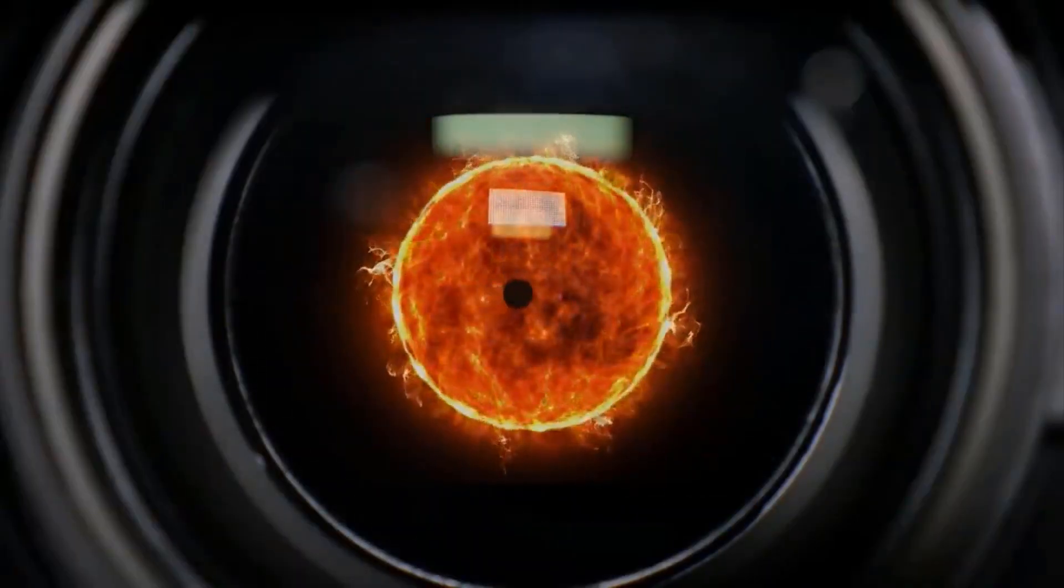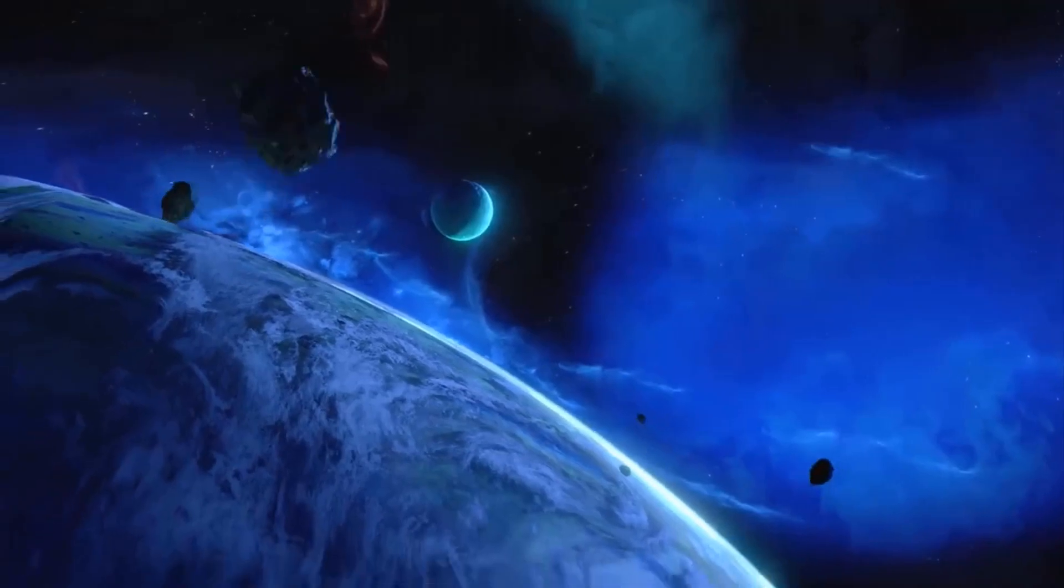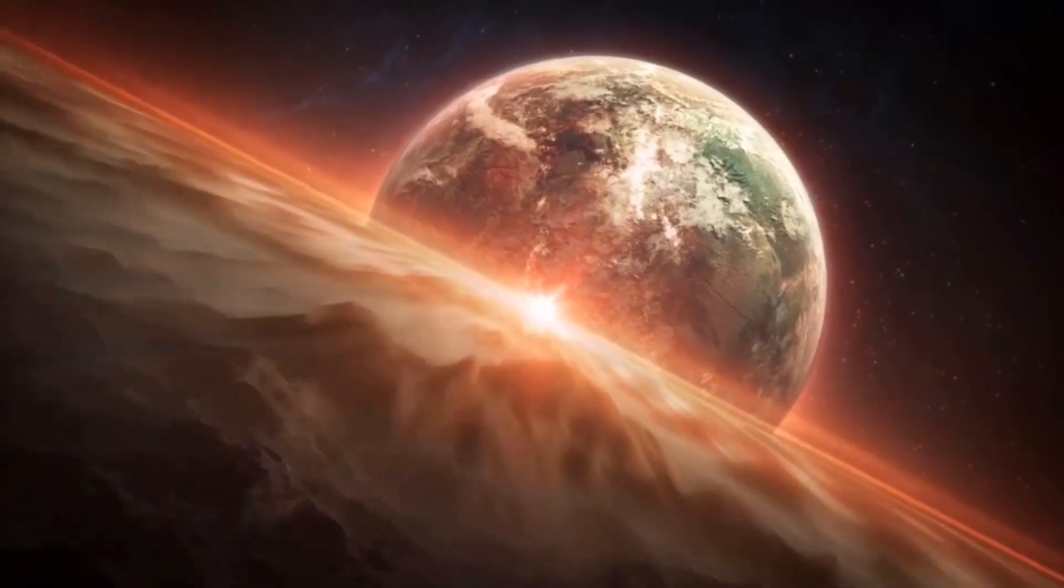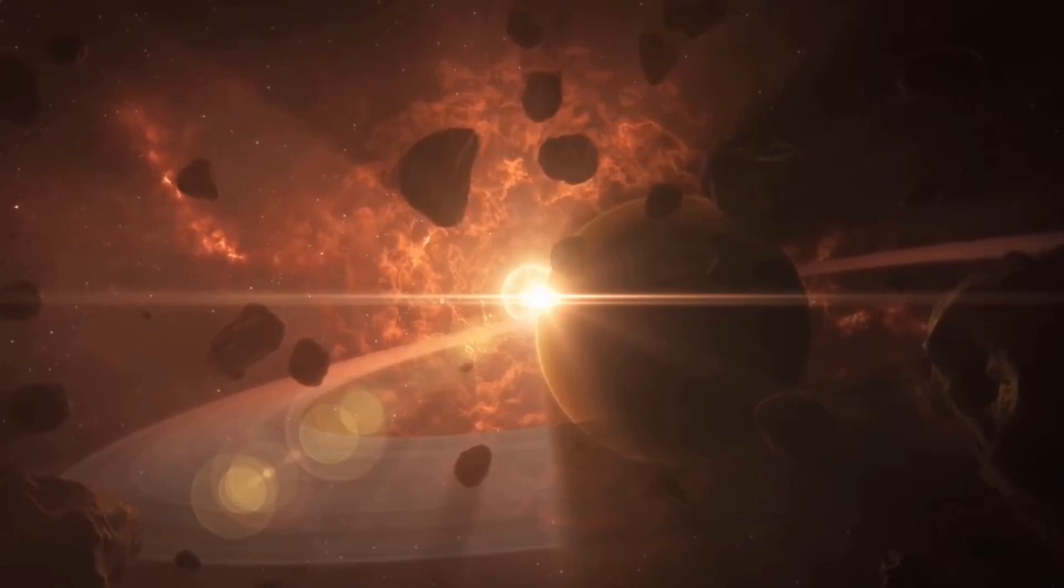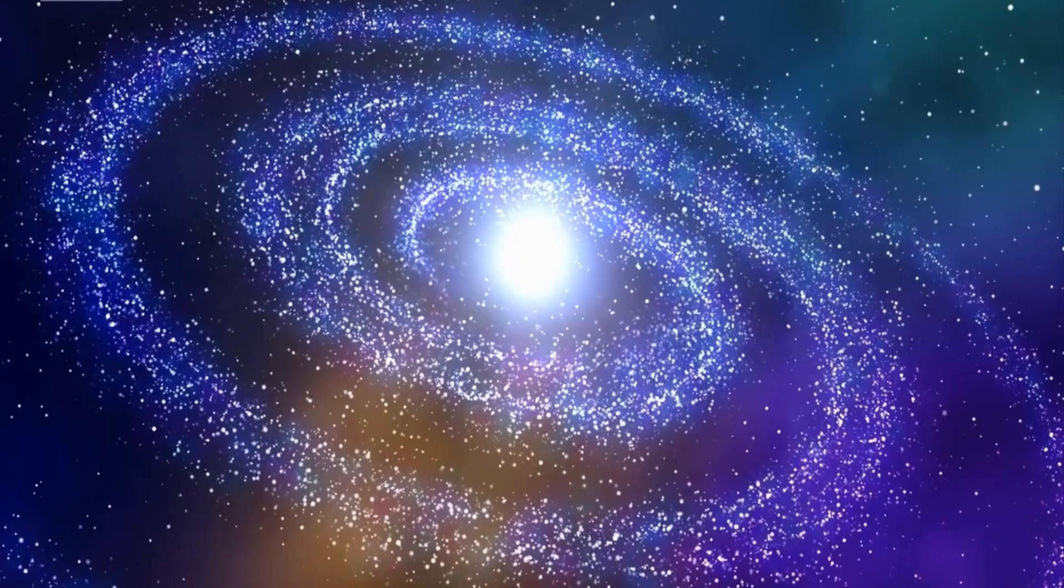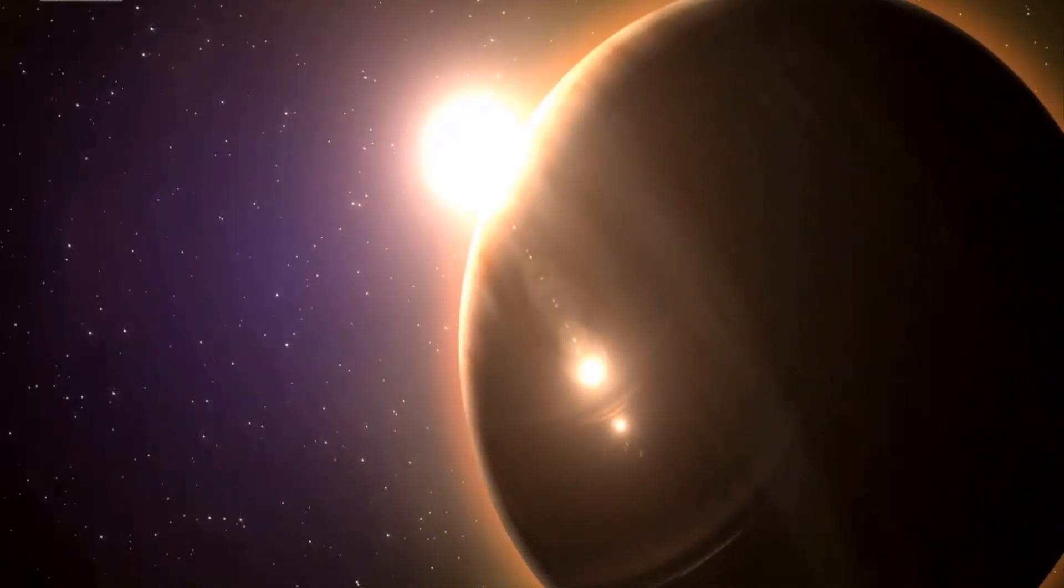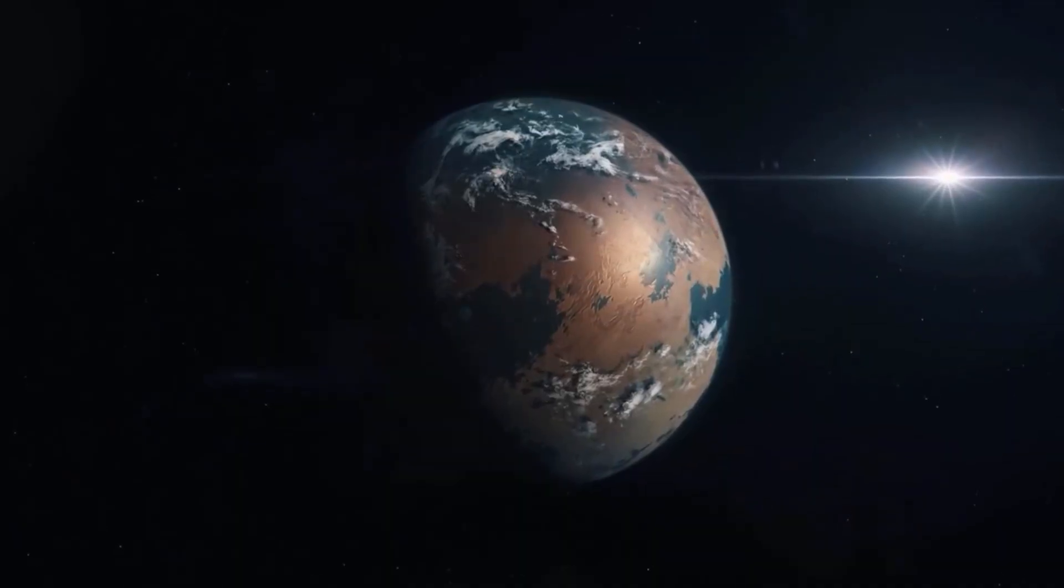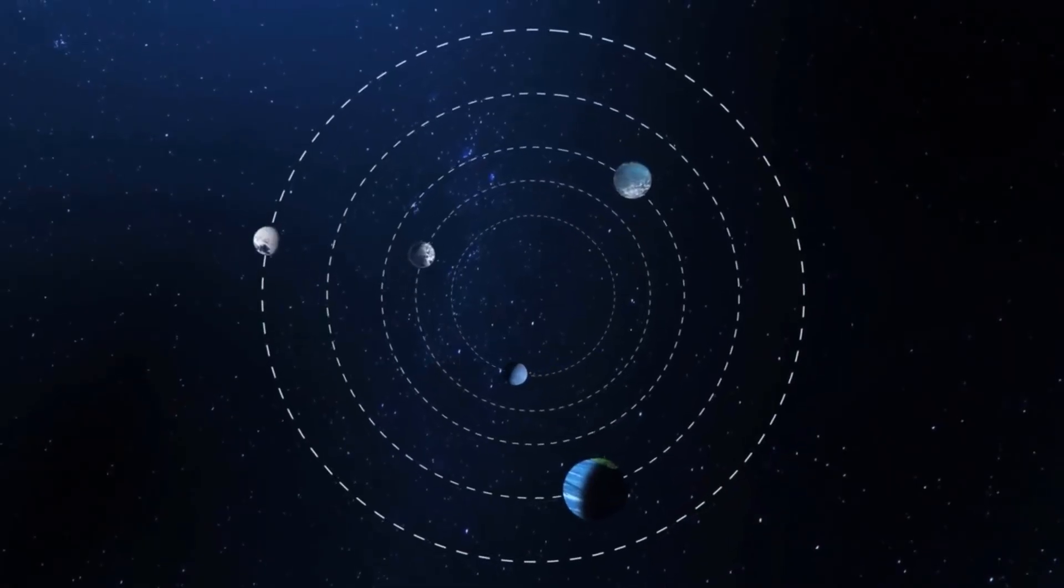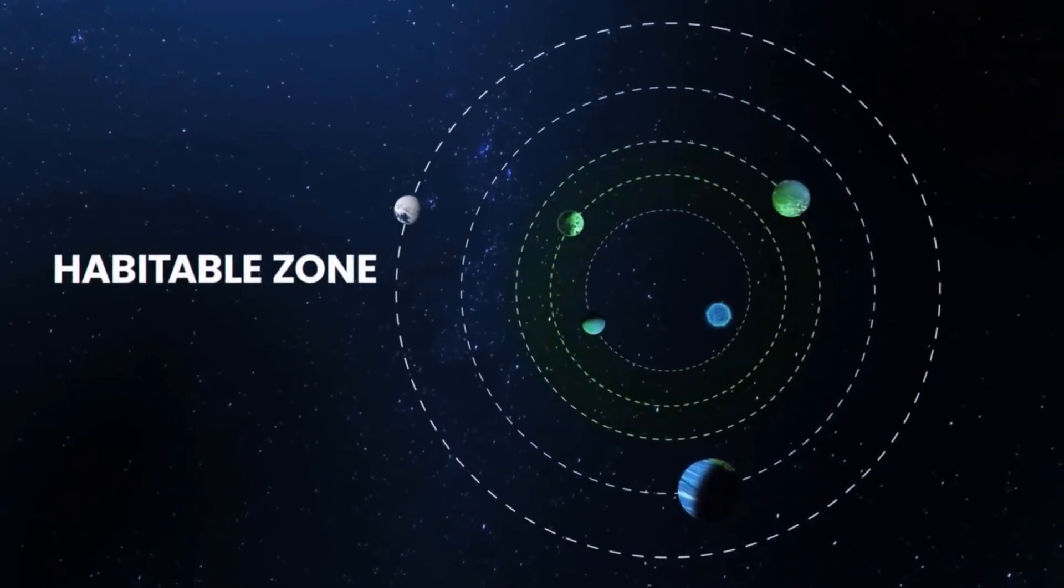Kepler-186f is one of those exoplanets which was discovered in 2014 by NASA's Kepler Space Telescope. This was the first Earth-sized planet ever discovered in the Goldilocks zone of another star. It is located some 500 light years from Earth in the constellation Cygnus. This planet is a noteworthy example of the search for extraterrestrial life.